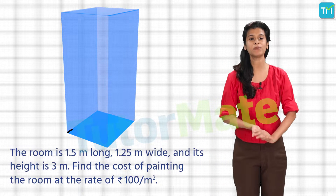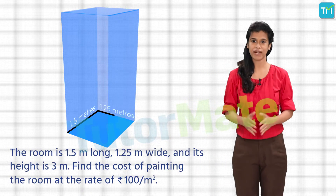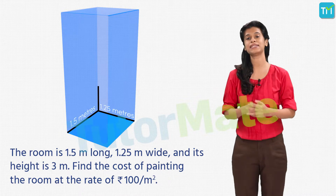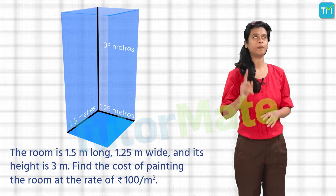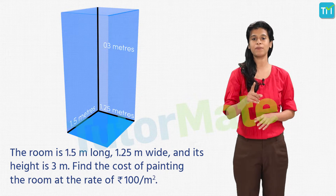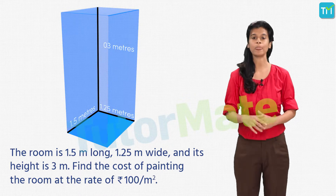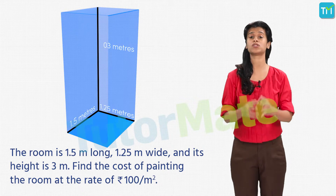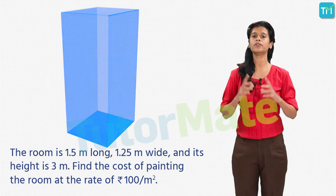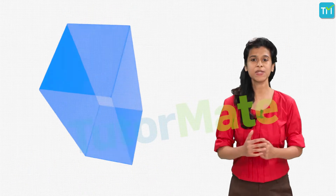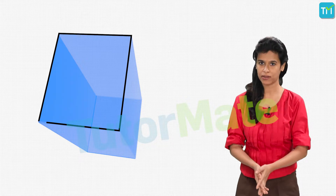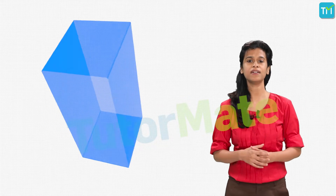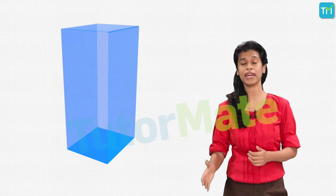Now that we have revised how to calculate the surface area of cubes and cuboids, why don't you help me in painting my room? My room is 1.5 meters long and 1.25 meters wide, and its height is 3 meters. The amount of paint required to paint 1 square meter will cost 100 rupees. We need to find the total cost to paint all 4 walls and the ceiling. Since we know the length, breadth and height, the room is the shape of a cuboid. We will find the curved surface area — the area of the 4 walls — and then calculate the area of the ceiling.